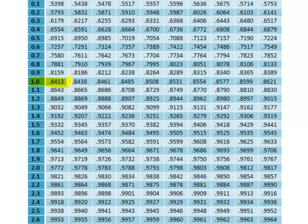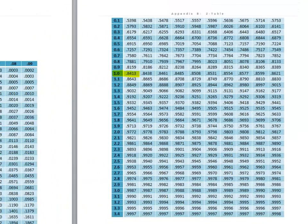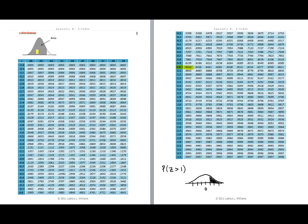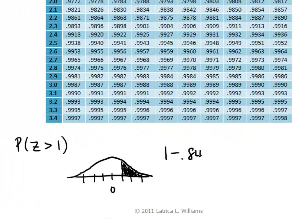However, recall that the table only tells you area to the left of a z-score. So for this example, we're trying to find the probability that z is greater than 1, so this is area to the right. So I'm going to subtract this probability from 1 since the total area under the curve sums to 1. Once I subtract, I obtain a probability of .1587. So the probability that a student scored greater than 87.02 is .1587.